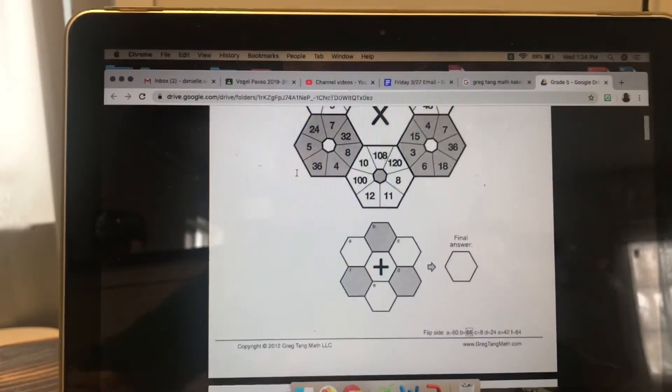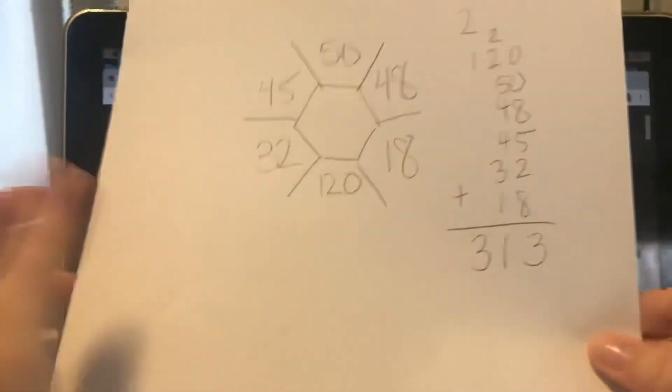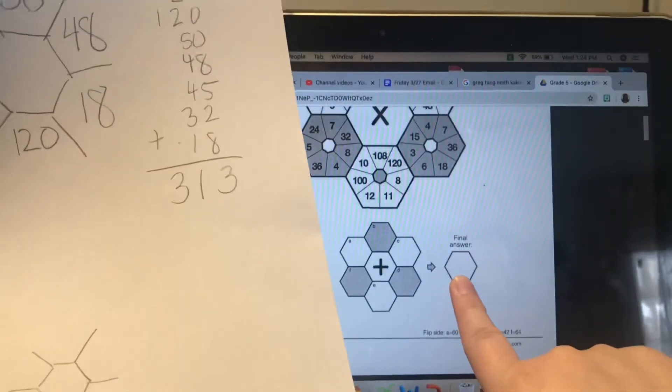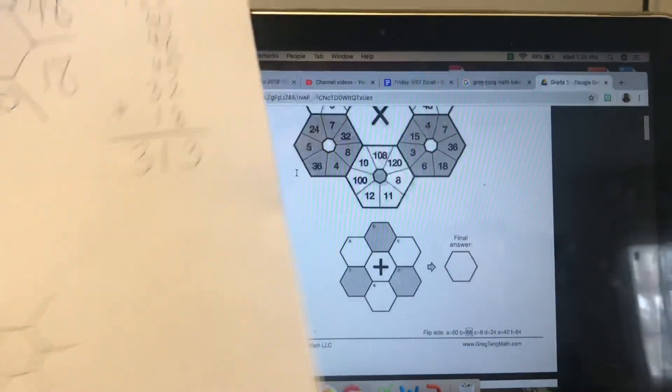2 plus 1 is 3. Okay, I added them all up and got 313. So that would be my final answer. 313.